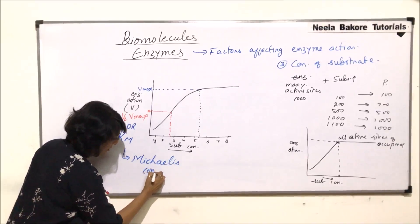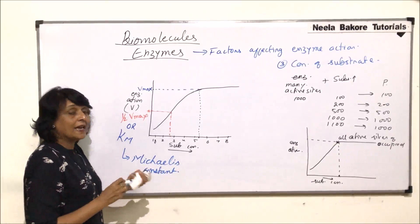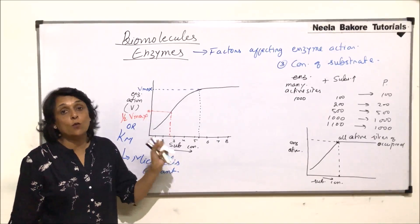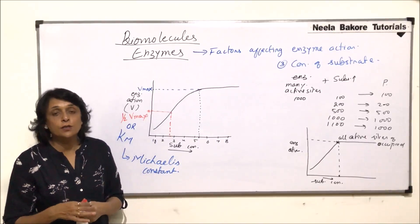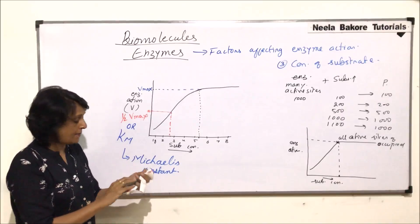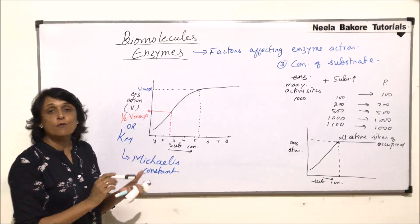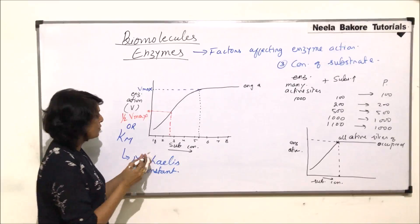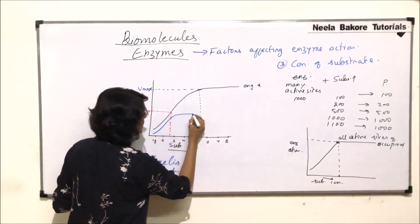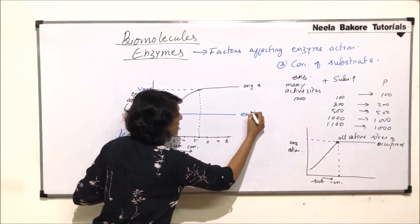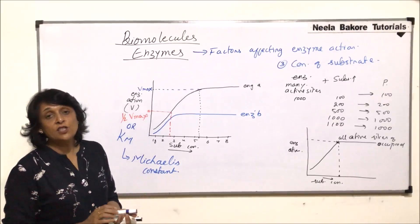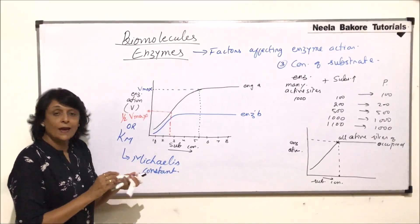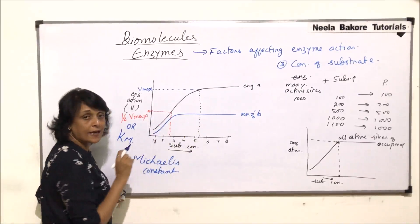Half of V-max is represented as Km, the Michaelis constant. In examinations, this graph is given and interpretation of the graph is the question. A very common question draws the same graph but with two lines — one for enzyme A and one for enzyme B. The question asks: which enzyme has higher affinity towards the substrate? We then need to identify the V-max and half of V-max, which gives us the Michaelis constant, for each enzyme.